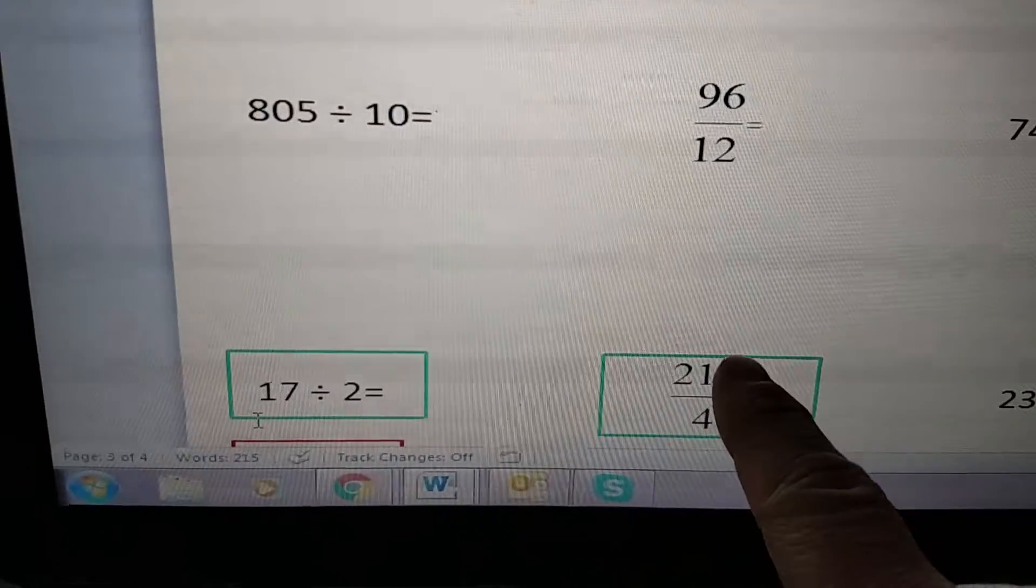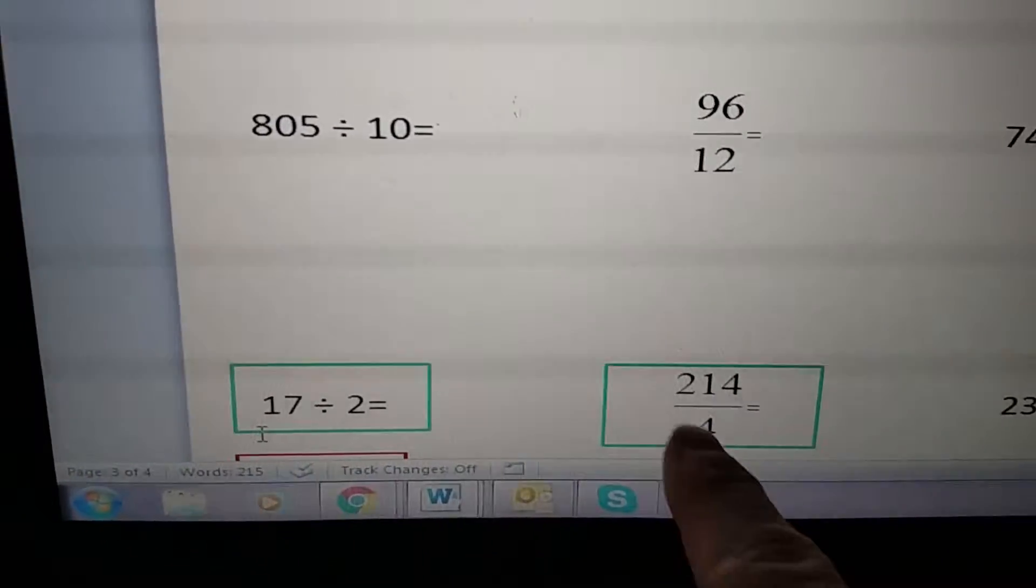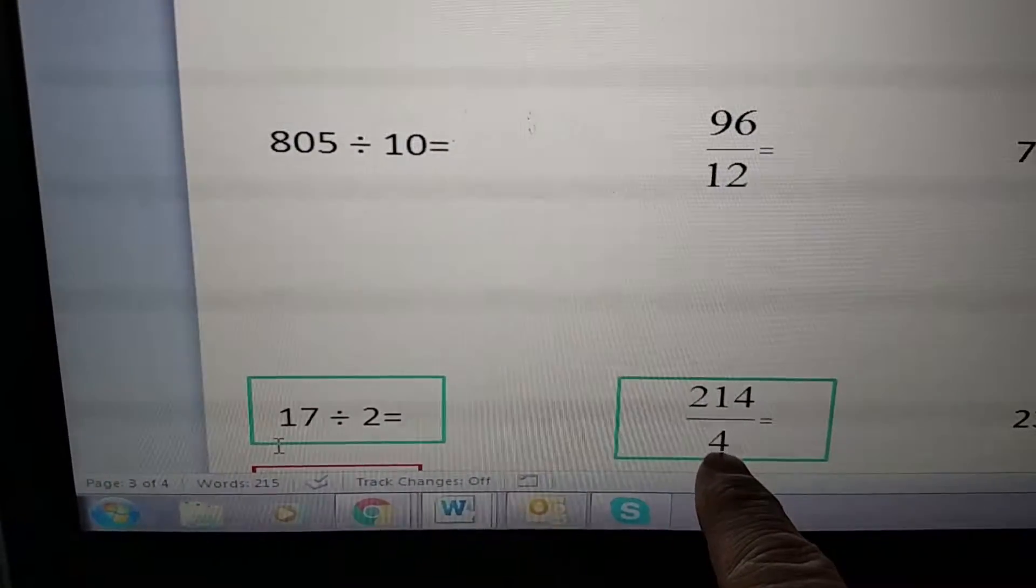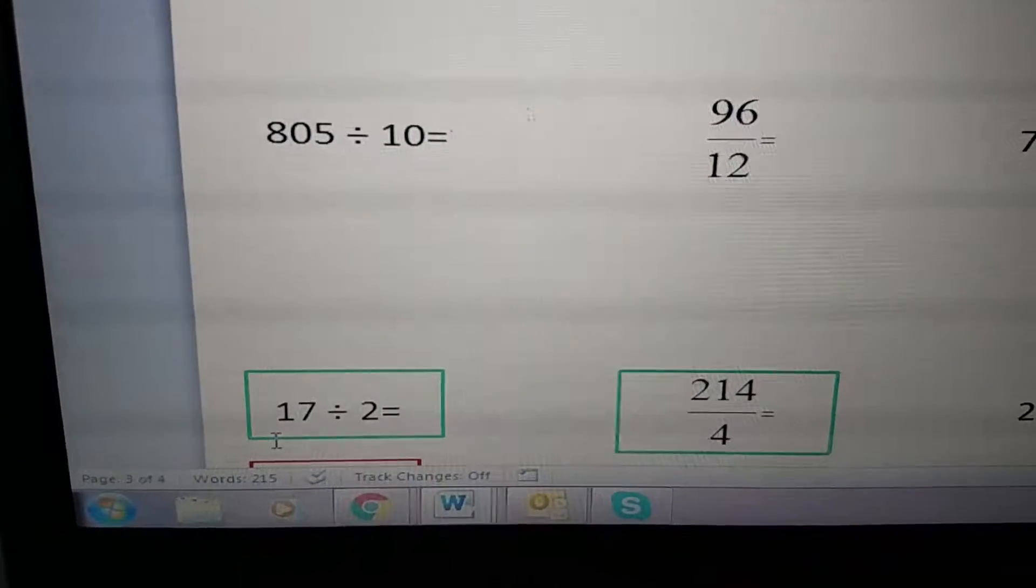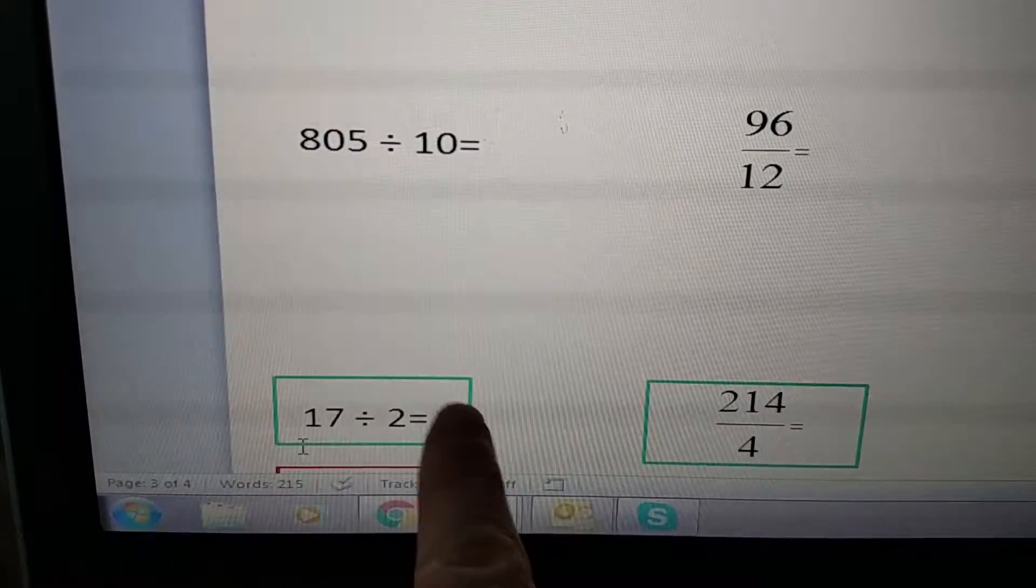If I go to this problem right here, I have 214 over 4, or 214 fourths. Here, this bottom number, your denominator, is your divisor. Knowing your divisor is the most important part.